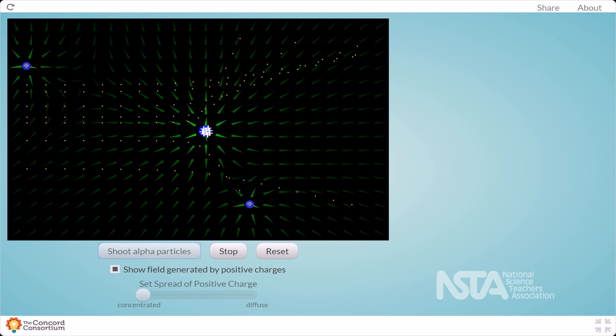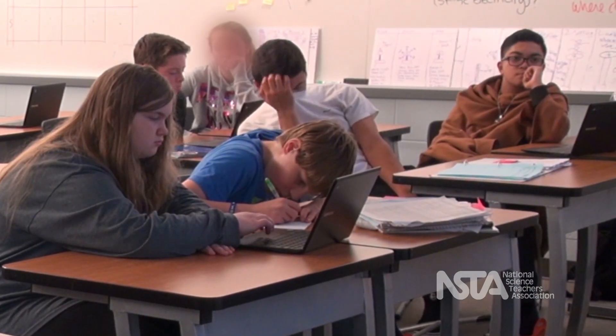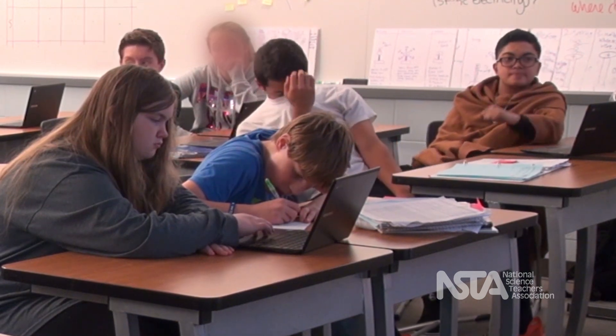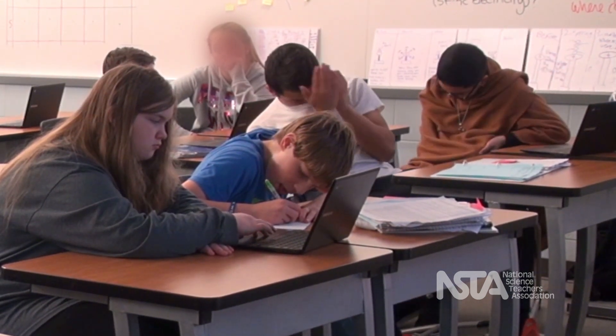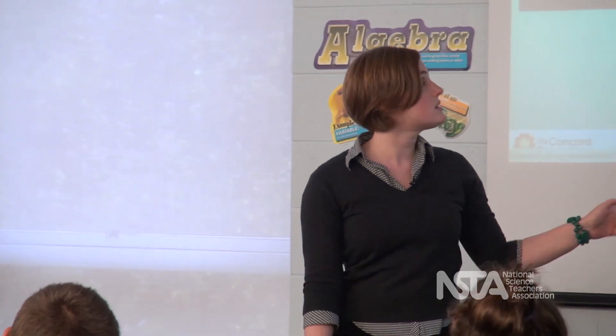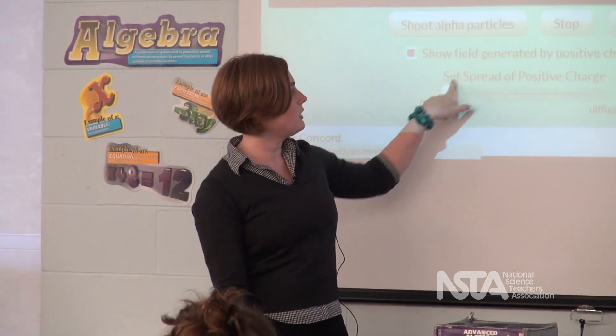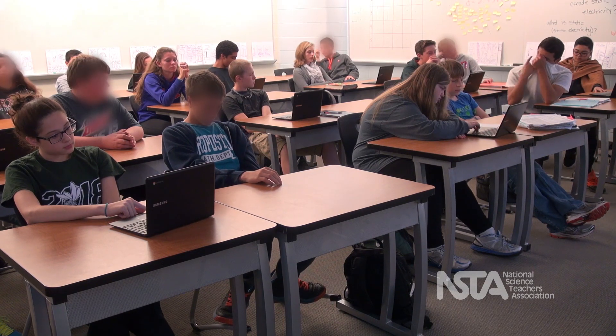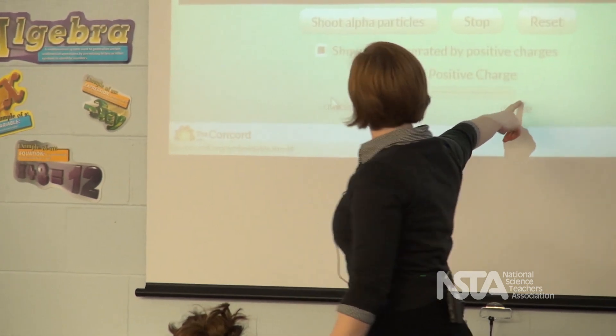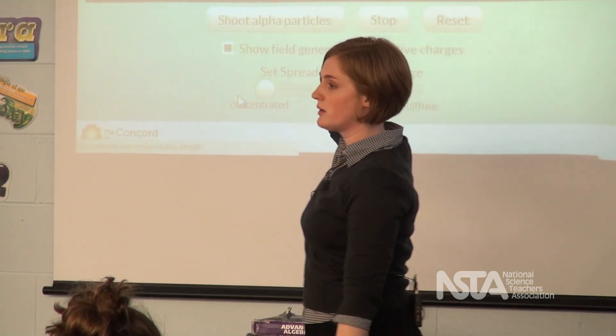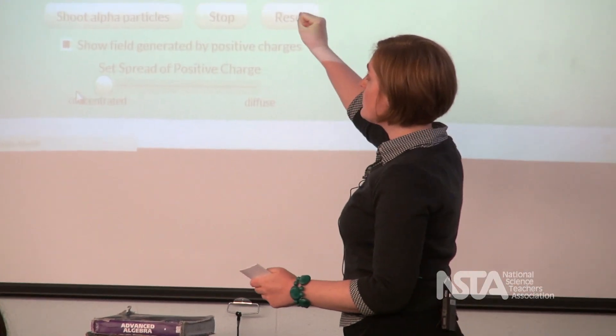But did anything change? The green things — they're brighter. So what did that mean? When we were working with the electric fields, what did brighter green things mean? The strength of the force got stronger. So what's the relationship between the size of that positive area and the electric field? When you concentrate it more, the green arrows indicate the force is stronger — because they're brighter.